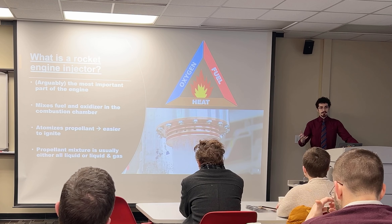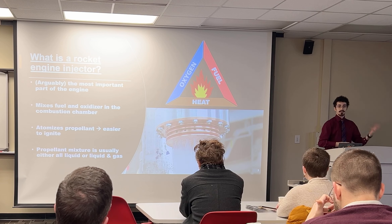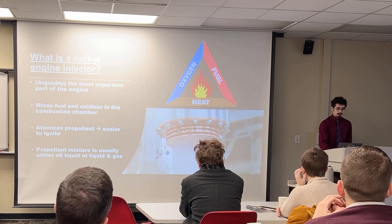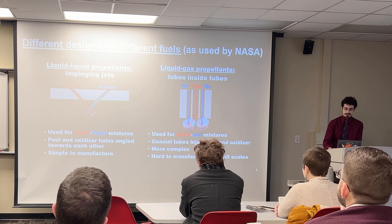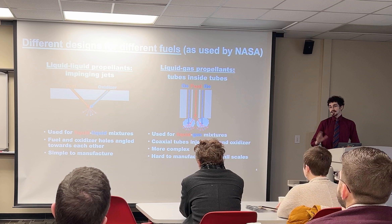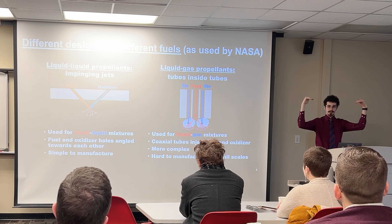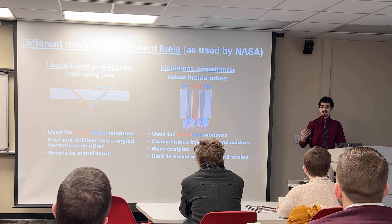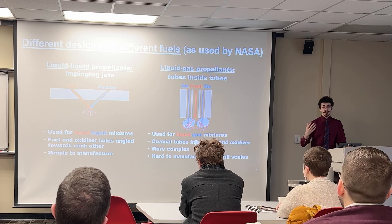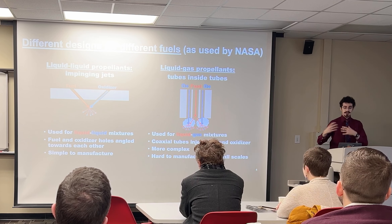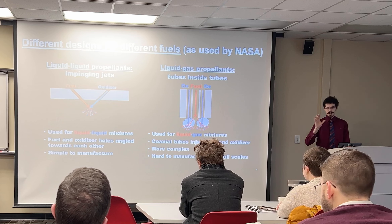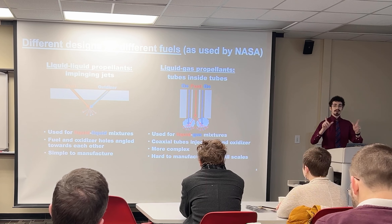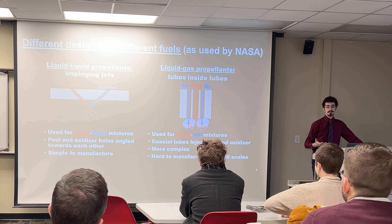In amateur rocket engines, your propellant is going to come in one of two types: either both the oxygen and the fuel are liquid, or one is liquid and the other is a gas. For liquid-liquid mixtures, you can go with a very simple injector design called an impinging jet injector — one stream of oxidizer and one stream of fuel angled towards each other; they smash together and mix. Very simple, very easy to manufacture. But once you have a liquid and a gas propellant mixture, things get more complicated. Industry leaders like NASA and SpaceX use variations on what's called a coaxial tube injector. These are very good at mixing gases and liquids together, but come at the trade-off of being way more complex and much more difficult to manufacture.